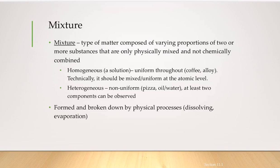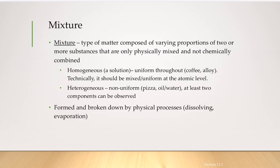In a heterogeneous mixture, you can see at least two components. For example, a pizza has a visible crust, a tomato sauce layer, cheese, and toppings — all visible separately. Mixtures are formed and broken down by physical processes such as dissolving, evaporation, or filtration.